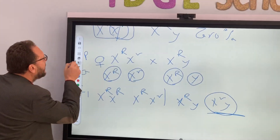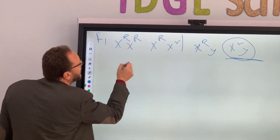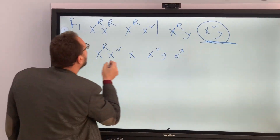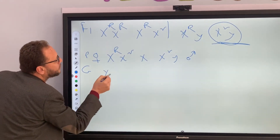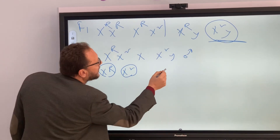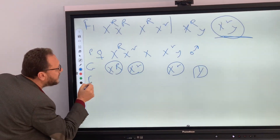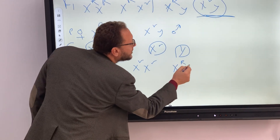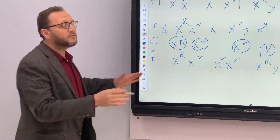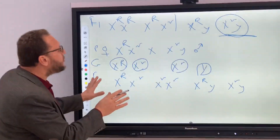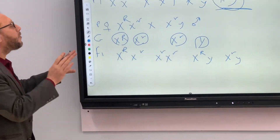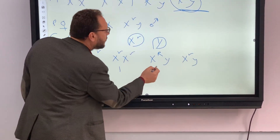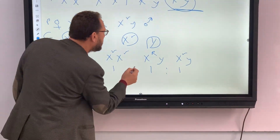What happens if this hybrid female (X^R X^r) marries a diseased male (X^r Y)? The gametes of the female will be two types: X^R and X^r. The gametes of the male will be X^r and Y. So the product will be X^R X^r, X^r X^r, X^R Y, and X^r Y. We find that the disease appears in both males and females. The ratio is: one healthy female, one diseased female, one healthy male, one diseased male. So the disease appears in 50% of offspring.